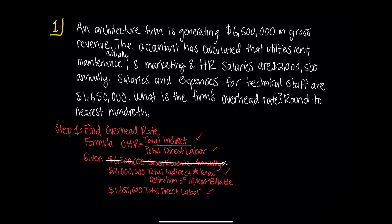Step two: let's plug in the variables we know into the formula. Total indirect expense is $2,500,000 and total direct labor is $1,650,000. That ratio is 1.20, rounded to the nearest hundredth. Don't forget to provide your answer to the correct decimal places if this is specified.